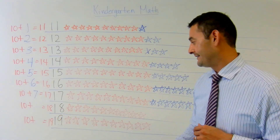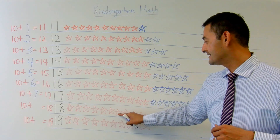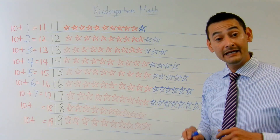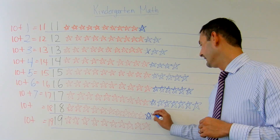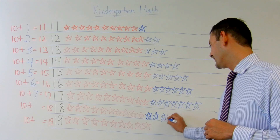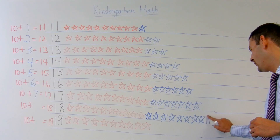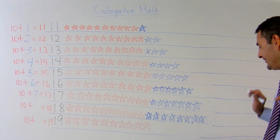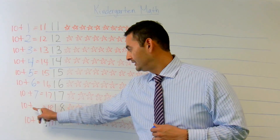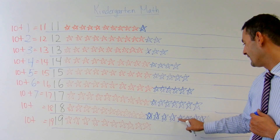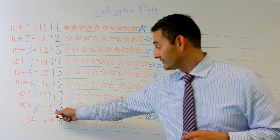Let's take a look at 18. Here I've got 10 ones: 1, 2, 3, 4, 5, 6, 7, 8, 9, 10 ones plus how many more ones is going to equal 18. Let's see: 10, 11, 12, 13, 14, 15, 16, 17, 18. So I've got 10 ones here plus how many more ones? 1, 2, 3, 4, 5, 6, 7, 8 more ones equals 18.